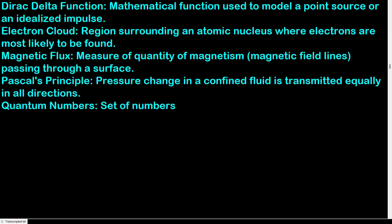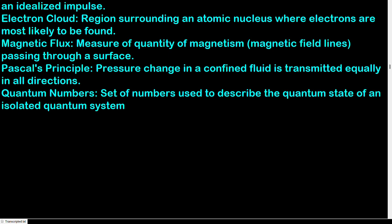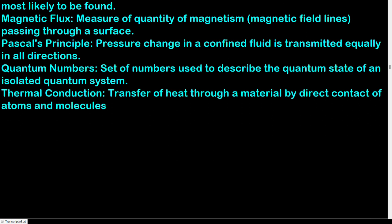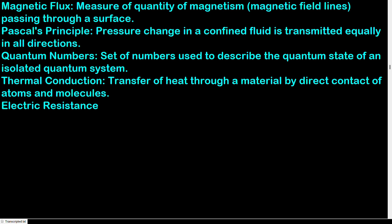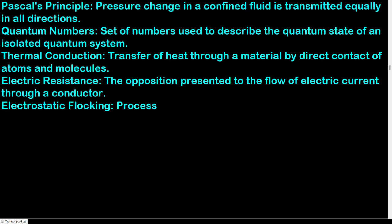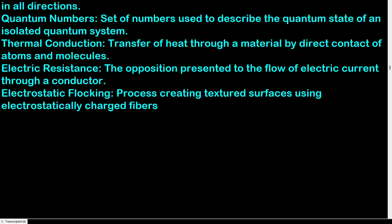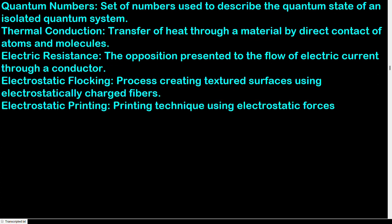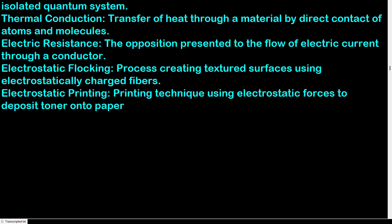Quantum numbers: set of numbers used to describe the quantum state of an isolated quantum system. Thermal conduction: transfer of heat through a material by direct contact of atoms and molecules. Electric resistance: the opposition presented to the flow of electric current through a conductor. Electrostatic flocking: process creating textured surfaces using electrostatically charged fibers. Electrostatic printing: printing technique using electrostatic forces to deposit toner onto paper.